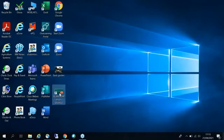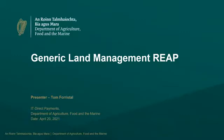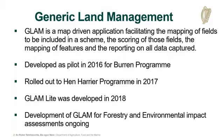GLAM — Generic Land Management System — was developed starting around 2016 as a pilot for the burn program. Hen Harrier uses it extensively, and GLAM Light was developed in 2018 for some of the smaller EIPs. Internally, it's used for forestry management plans and environmental impact assessments, and it's now being used for REAP with other areas to follow.